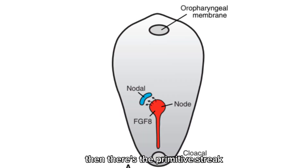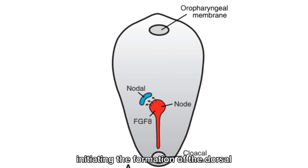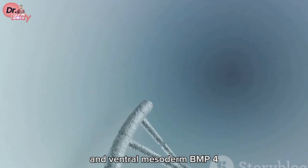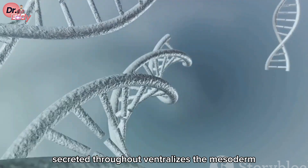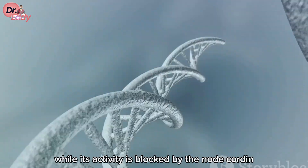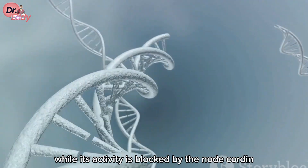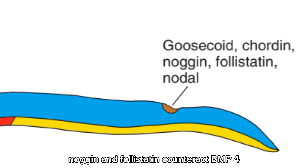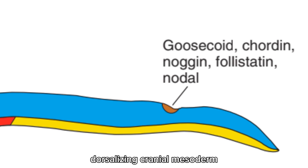Then there's the primitive streak, maintained by the nodal gene, initiating the formation of the dorsal and ventral mesoderm. BMP4, secreted throughout, ventralizes the mesoderm while its activity is blocked by the node. Chordin, noggin, and follistatin counteract BMP4, dorsalizing the cranial mesoderm.